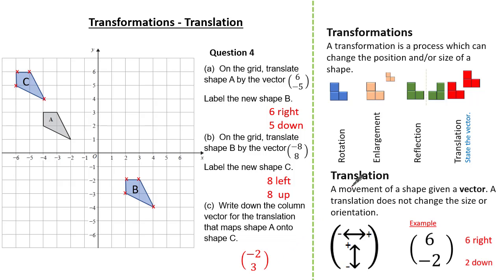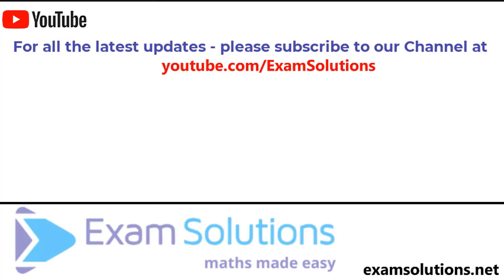In summary, we've looked at translation as one of our transformations, identifying it as a movement which does not change the size or the orientation of a shape. We also recognised the importance of vector notation when describing a translation. If you like this video, please give us a thumbs up, leave your comments down below, and subscribe to this channel so you'll be the first to know when we release our next videos.